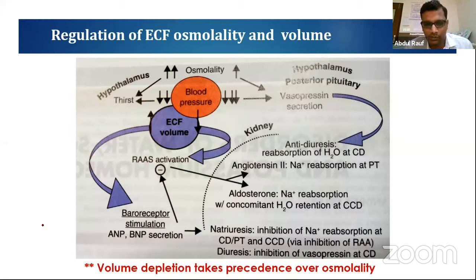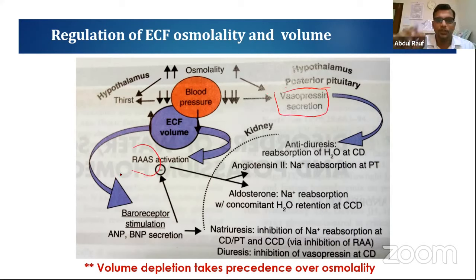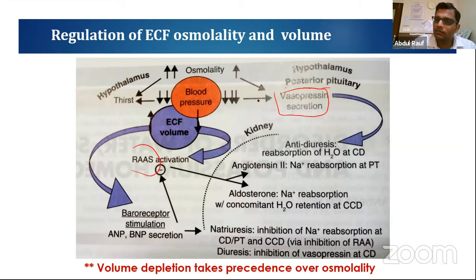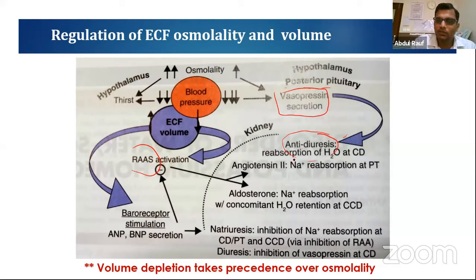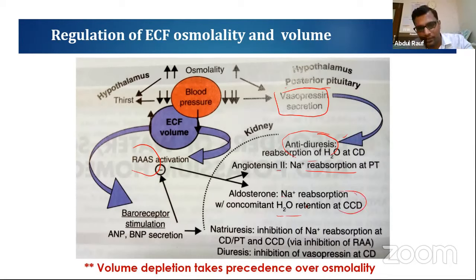There are two ways of regulating sodium. One is via the pituitary using vasopressin secretion, and another is via the kidney using the RAS mechanism. Whenever ECF volume decreases or plasma volume falls causing a drop in blood pressure, vasopressin is secreted from the hypothalamus to activate the collecting duct and retain water. Simultaneously, the renin-angiotensin mechanism is activated: angiotensin II causes sodium reabsorption at the proximal tubule, and aldosterone causes sodium and water retention at the collecting duct.